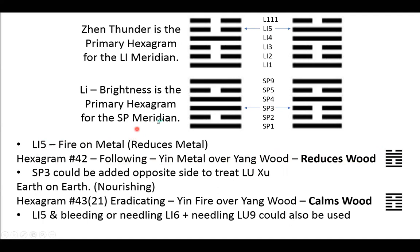Just as an example, we could use Spleen 3 on the opposite side to treat the lung deficiency. We've got bilateral pain in the stomach and kidney meridians. The large intestine meridian will treat both sides for the kidney, but it will only treat one side for the stomach. So if we do Large Intestine 5 on the left hand side, we could add Spleen 3 on the right hand side to cover both aspects of the stomach. We're still treating the underlying pathology — reducing the excess in the large intestine meridian and tonifying the lung, so we're treating the underlying pattern as well.